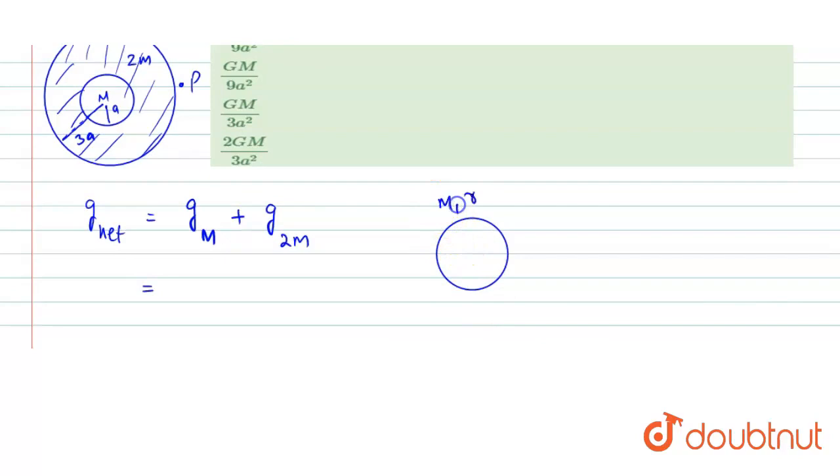the field at the outer point is given by GM/r². This is true for a solid sphere.